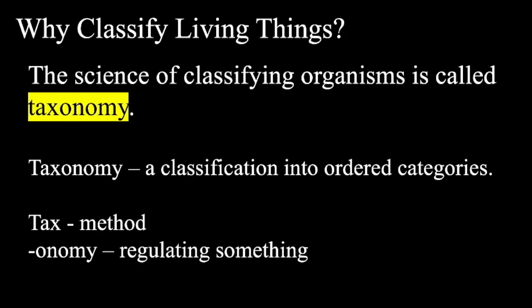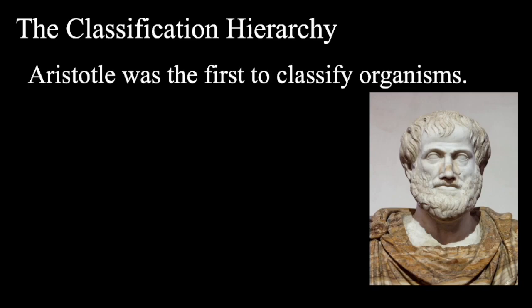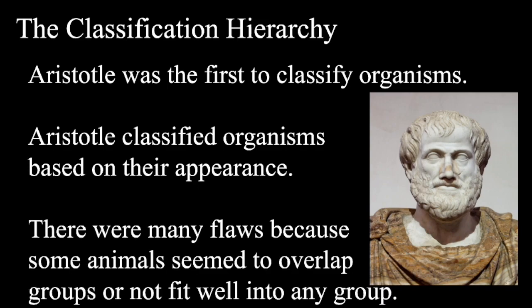The science of classifying organisms is called taxonomy — a classification into ordered categories. 'Tax' meaning method, 'onomy' meaning regulating something. Aristotle was the first to classify organisms, based on their appearance, but there are many flaws because some animals seem to overlap groups or not fit well into any group.